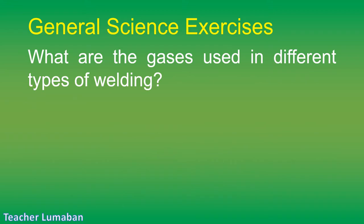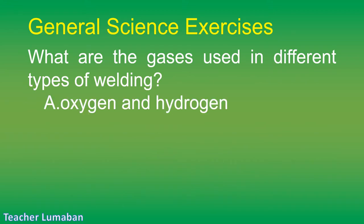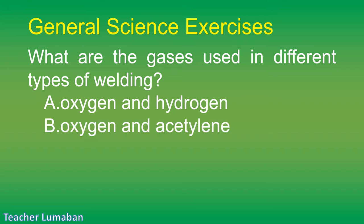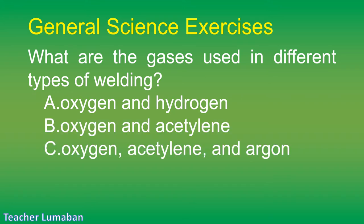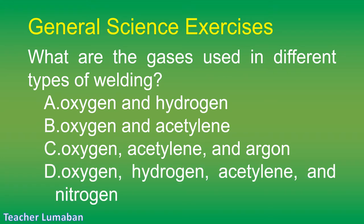What are the gases used in different types of welding? Letter A: oxygen and hydrogen. Letter B: oxygen and acetylene. Letter C: oxygen, acetylene, and argon. Letter D: oxygen, hydrogen, acetylene, and nitrogen.